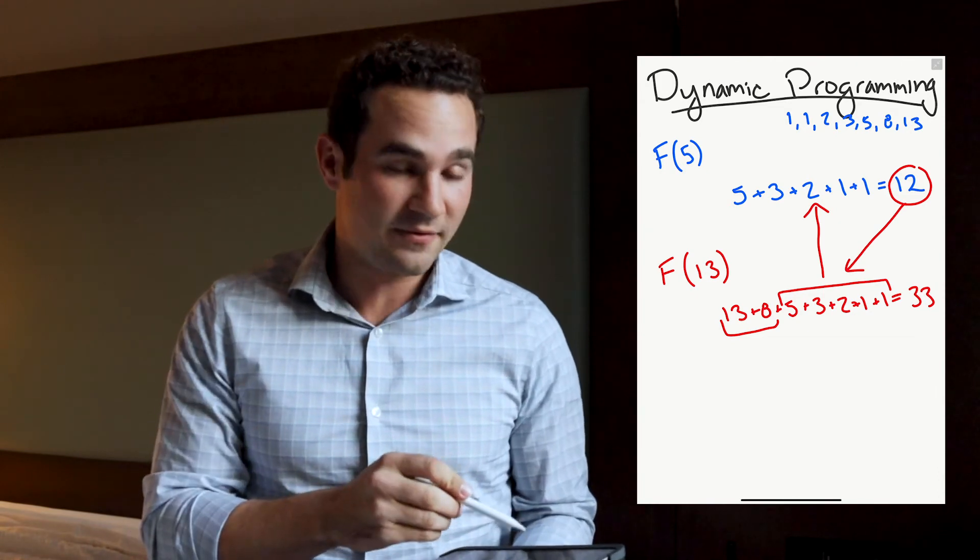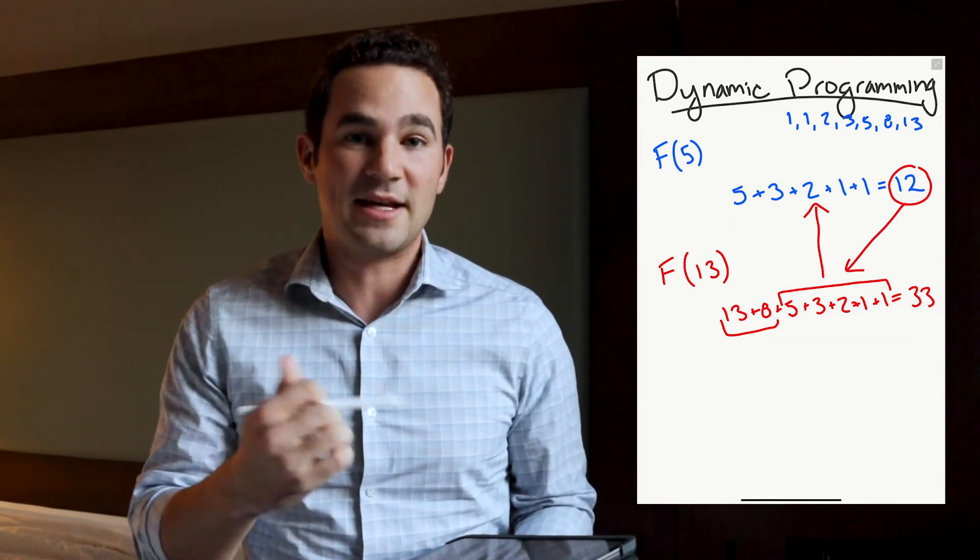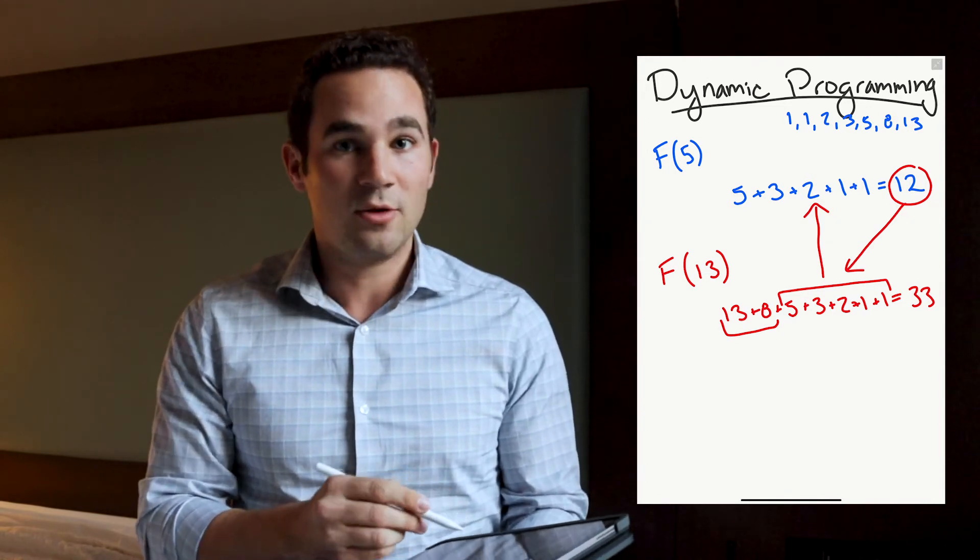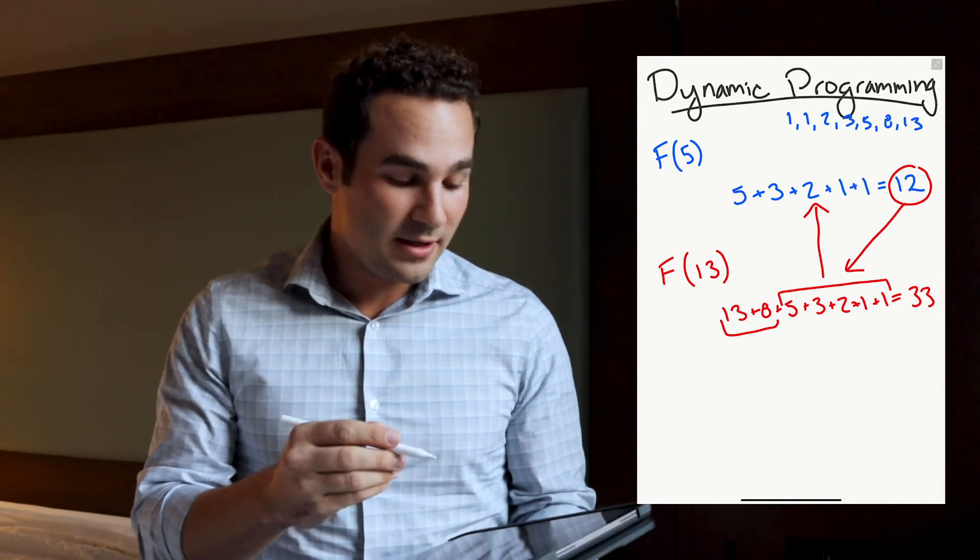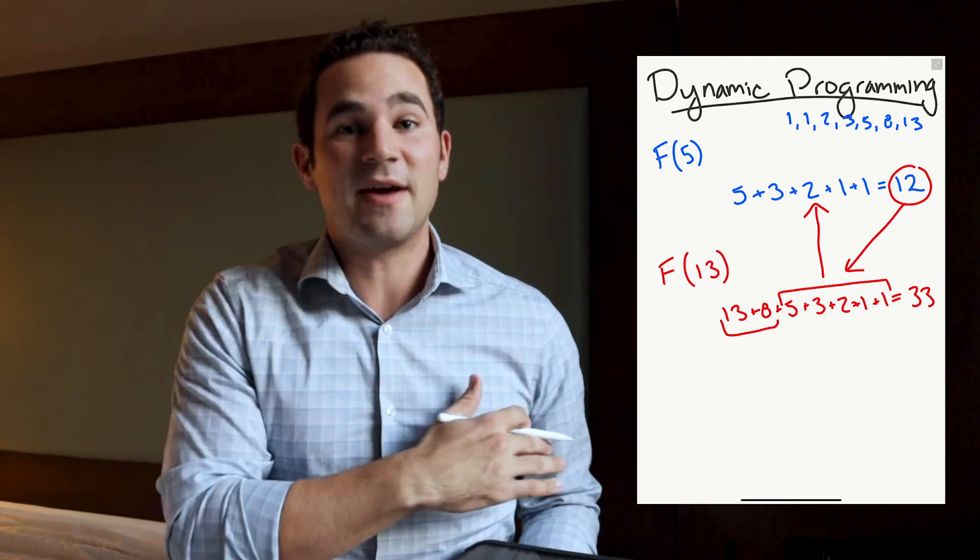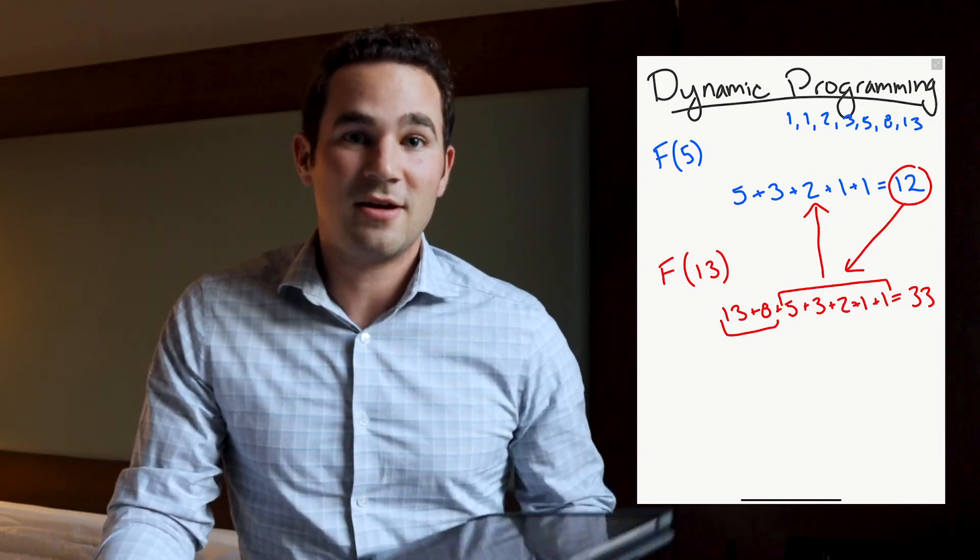So, we would save that F of five into an array, and then next time we wanted to call it, for example, this F of 13 would call the F of five, we are then going to be able to copy that existing value and not do all those additions all over again.